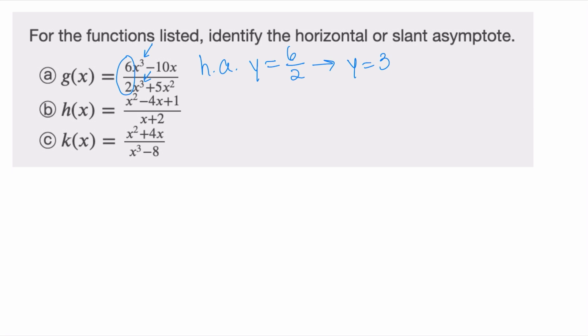For part B, h(x): the degree of the numerator is two — that's the largest power — and the degree of the denominator is one. Therefore, the top is bigger. This tells us there is no horizontal asymptote. But because the top is bigger by exactly one, there is a slant asymptote.